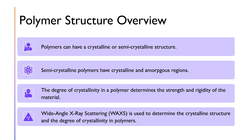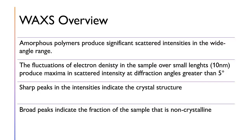Wide-angle X-ray scattering is most commonly used on polymers. Polymers have a crystalline or semi-crystalline structure, and semi-crystalline structures have both crystalline and amorphous regions. The mix of these regions gives polymers a degree of crystallinity, which determines the strength and rigidity of the material. Wide-angle X-ray scattering is used to determine the crystalline structure and the degree of crystallinity in these polymers, because the amorphous regions produce significant scattered intensities in the wide-angle range.